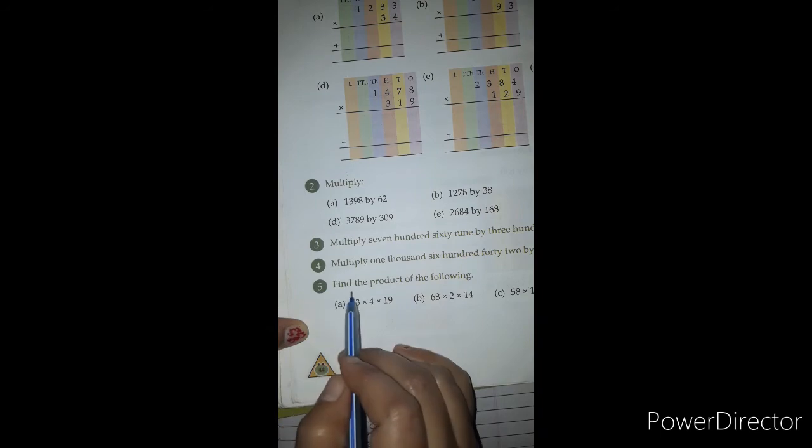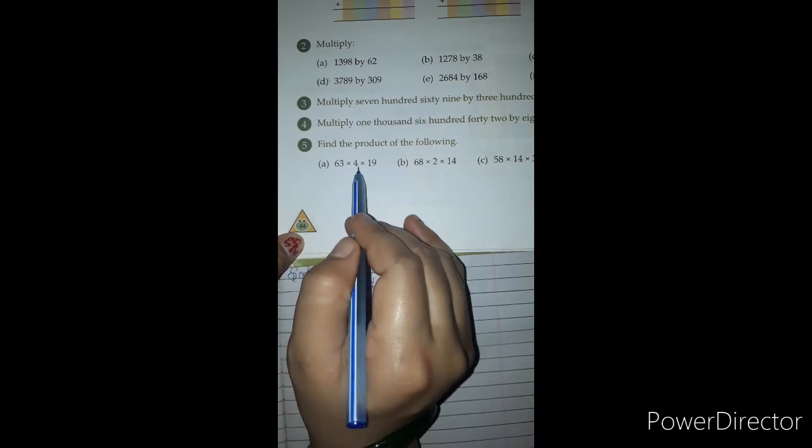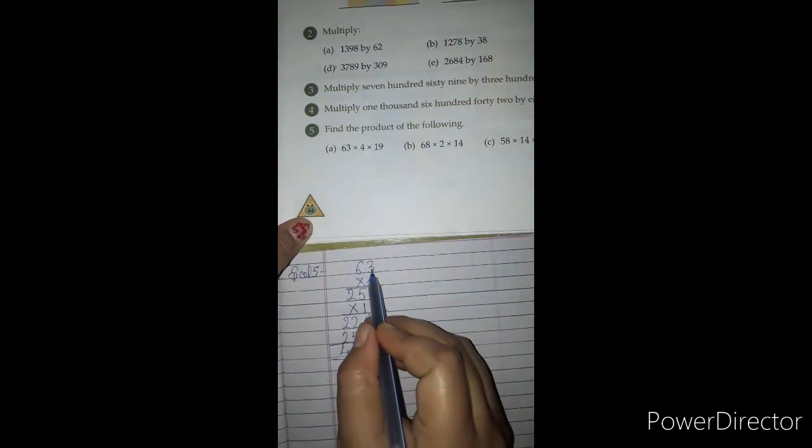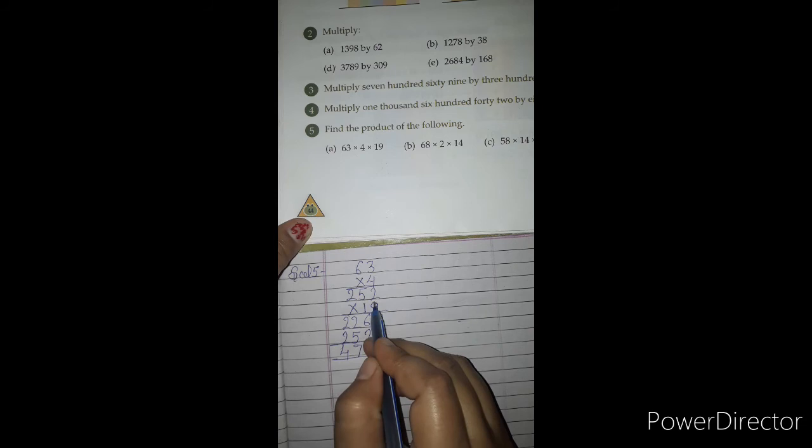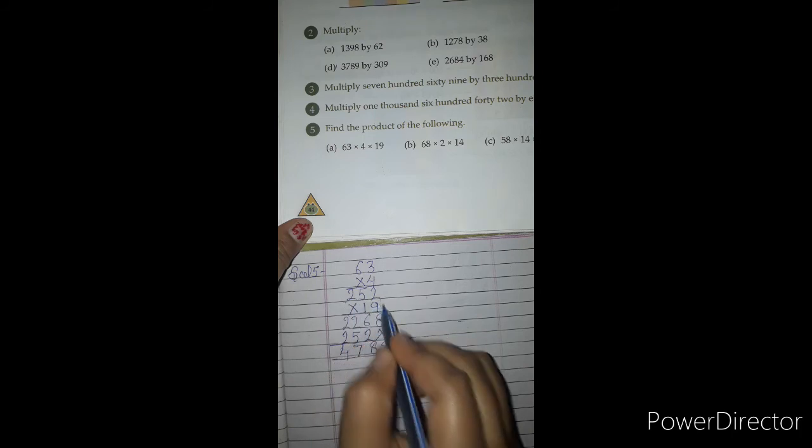Question number 5. Find the product of the following. Solution A. First we will solve 63 and 4. Means, we multiply 4 into 63. 4 times 3 is 12, write 2, carry 1. 4 times 6 is 24, add 1 is 25. This is our 252, the product from multiplying by 4.